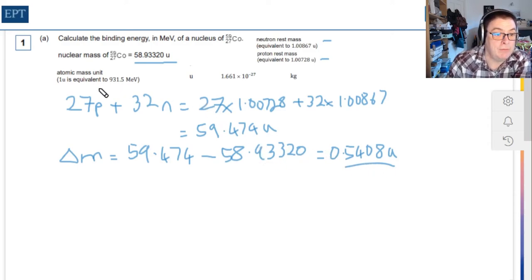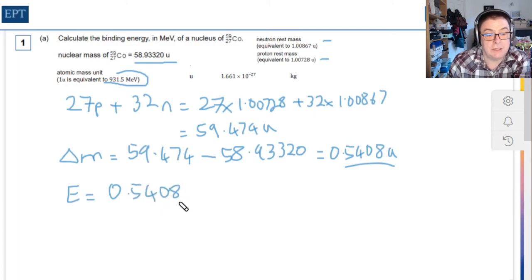All that remains to be done is to convert that into energy. We're given the conversion factor where it tells us that 1 atomic mass unit is equal to 931.5 MeV. Therefore, the binding energy is going to be equal to 0.5408 multiplied by 931.5 MeV, and when you perform that calculation you get 503.8 MeV.